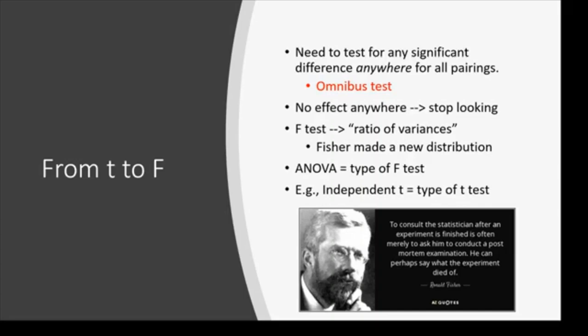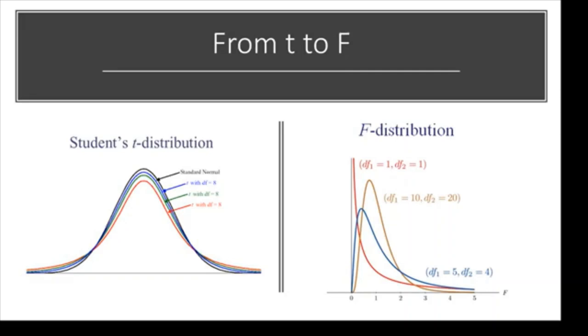You can see how if omnibus says there are no differences, it's not worth pursuing anymore — we shouldn't move forward because there's nothing to look for. I wanted to show you a picture of the T distribution versus the F distribution. The T distribution looks very much like a normal distribution, especially with a larger sample size, approximating a normal distribution more closely. We used degrees of freedom to indicate the different distribution shapes. As degrees of freedom gets smaller, the distribution gets flatter and wider.